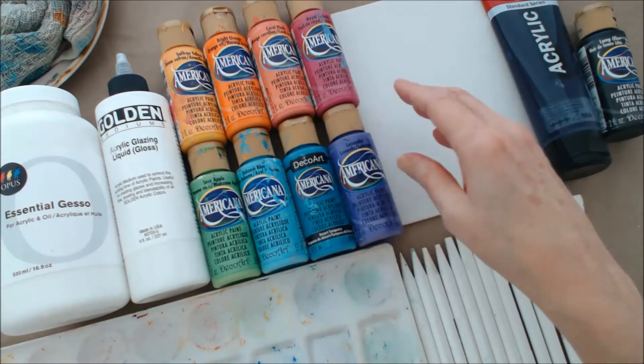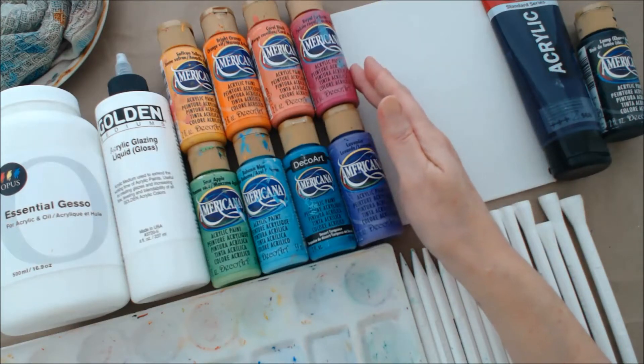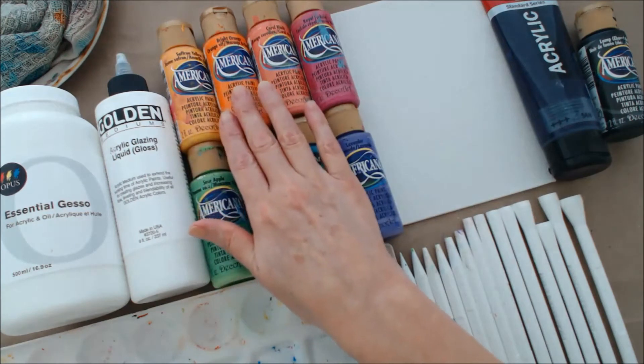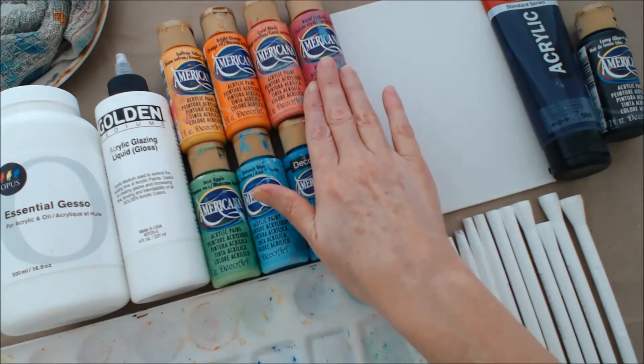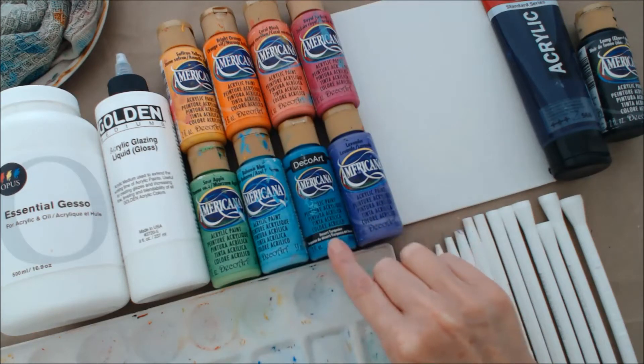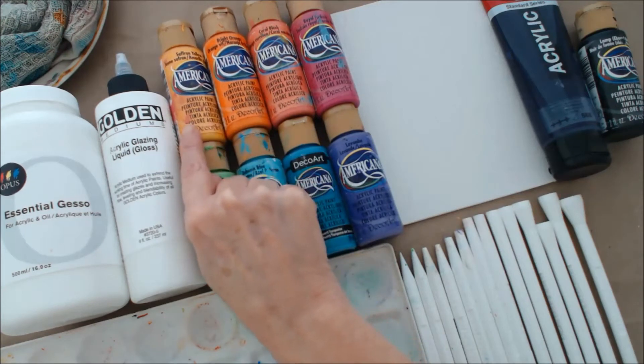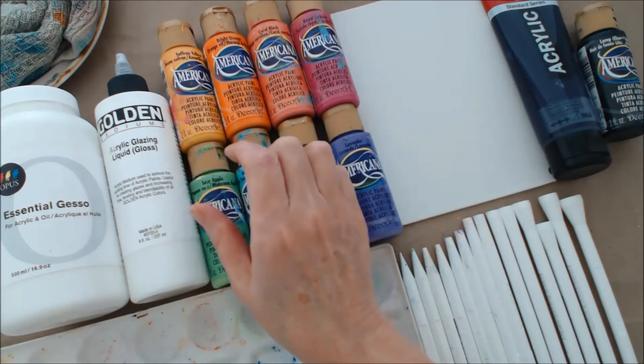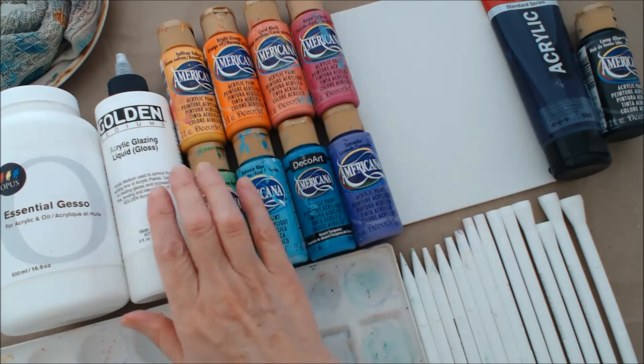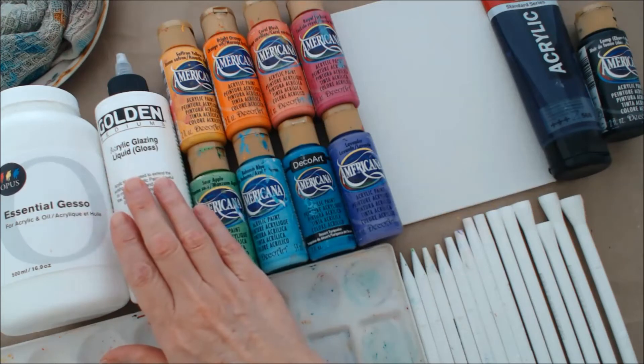Of course you'll need some acrylic paints. I love the Americana brand. Here I have saffron yellow, bright orange, coral blush, royal fuchsia, sour apple, bahama blue, desert turquoise, and lavender. Sometimes your paints can be a little bit too thick, in which case you can use an acrylic glazing liquid to help thin the paint down.